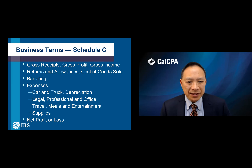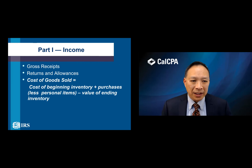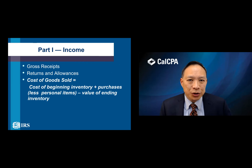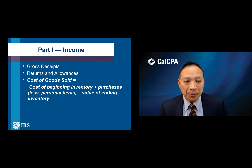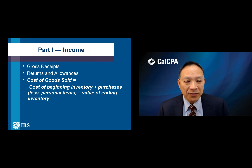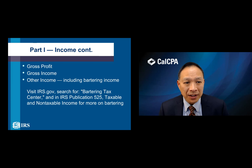After subtracting your business expenses, you have your net profit or loss, and that's what we pay taxes on. Starting with gross receipts, minus returns and allowances, minus cost of goods sold — not every business will have cost of goods sold. If you're in a service business, you probably won't have any. Cost of goods sold is computed as beginning inventory plus purchases, minus personal items, minus the value of ending inventory. That's why keeping track of your inventory is very important, and there are services you can hire to help compute it.